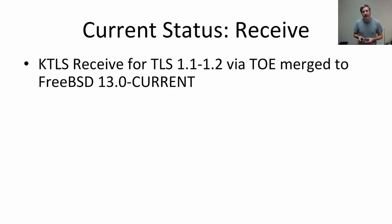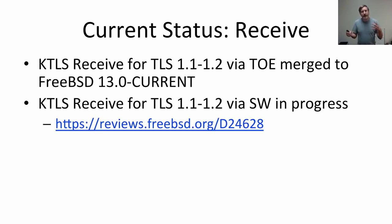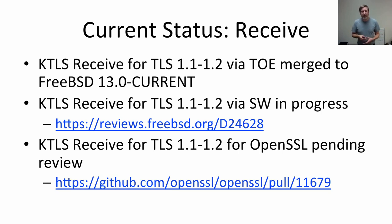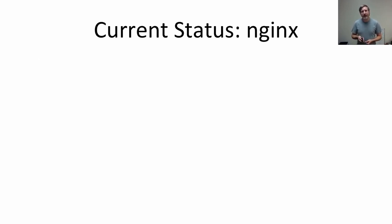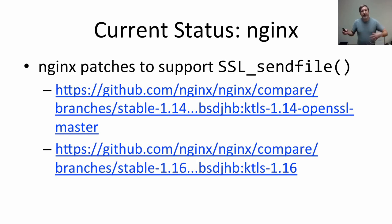On the receive side, KTLS receive for TLS 1.1 and 1.2 via TOE has been merged into FreeBSD-CURRENT including Chelsio T6 TOE support. Software-based TLS receive is in progress with an open review — Rick Macklem has been testing it for NFS over TLS work. An OpenSSL pull request for receive support is also open. Outstanding NGINX patches enable higher performance via SSL_sendfile for serving static content over a TLS socket, with patches against both 1.14 and 1.16 derived from Netflix's patches.